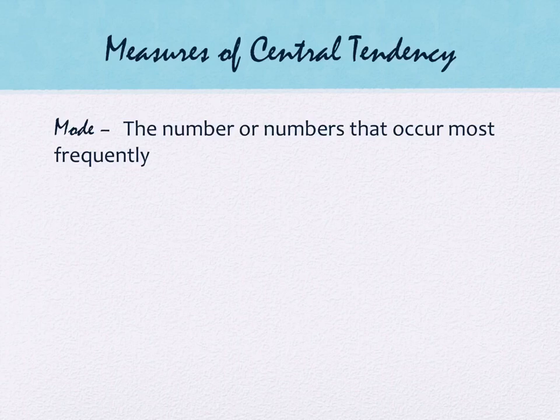The third one is mode. Mode is the number or numbers that occur most frequently. Modes are often helpful when you have a lot of values that are really close or identical and you have some crazy outliers. For example, my age in this class would throw things off because I'm considerably older. Similarly, averaging in the superintendent's salary with teachers' salaries might make things look skewed because he's going to make a whole lot more than the janitor or the teachers.